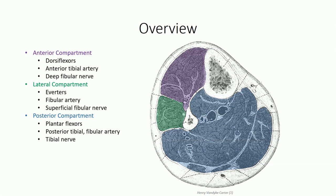Today our focus is on the posterior compartment. This can be subdivided into a superficial and deep posterior compartment, separated by a neurovascular plane. The muscles of the superficial compartment are the principal plantar flexors of the body, while the deep compartment muscles flex the toes and assist in ankle inversion. Both sub-compartments receive their blood supply from the posterior tibial and fibular arteries, and are all innervated by the tibial nerve.